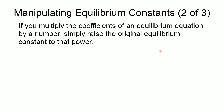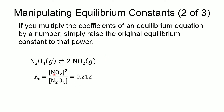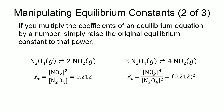Now if we multiply the coefficients of an equilibrium equation by a number, we simply raise that original equilibrium constant to that power. Here is our example for N2O4 in equilibrium with 2NO2. If we change the coefficients to twice the original amount — doubling the coefficients — we're going to square the value of our equilibrium constant. So 0.212 squared comes out to 0.0449.